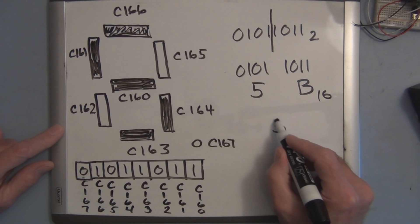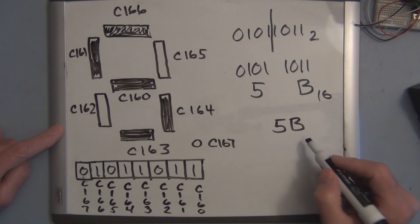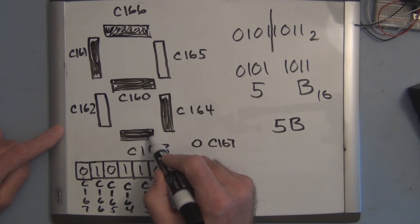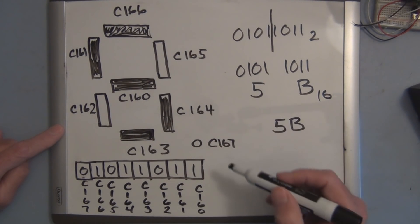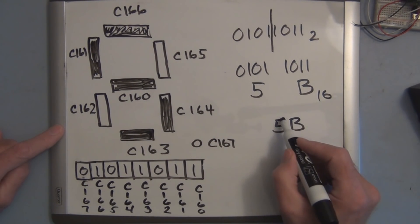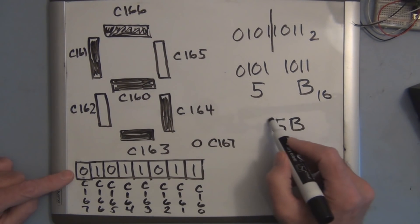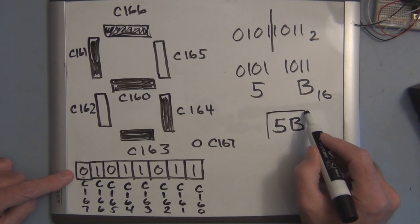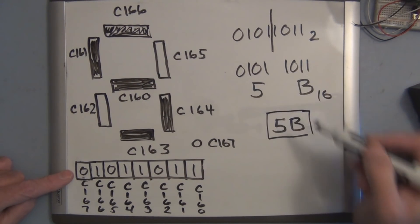So we would enter 5B into the, using the hexadecimal keypad, and that binary number - so we don't store 5B, we actually store this binary number, but this is what we get to enter in instead of all these 1s and 0s.